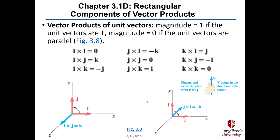For unit vector products, the magnitude equals 1 if the unit vectors are perpendicular and 0 if they are parallel. For example, i cross i = 0, j cross j = 0. i cross j = k, j cross k = i, and k cross j = −i, meaning it has magnitude 1 but points in the negative x-direction.